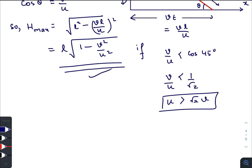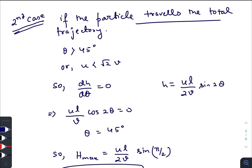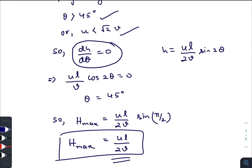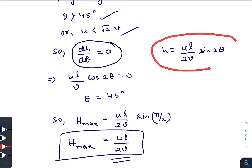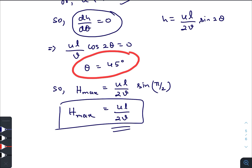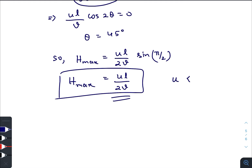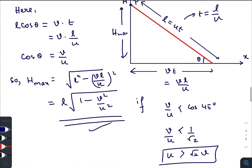The second case is when u < √2·v. If the particle travels the complete trajectory, then theta reaches beyond 45°. In that case, we simply use the standard maximum-minimum method: set dh/dtheta = 0. Recalling the expression for h, we get (uL/v)·cos(2·theta) = 0, so cos(2·theta) = 0, giving 2·theta = 90°, therefore theta = 45°. Substituting theta = 45° gives the value of h_max. This h_max applies when u < √2·v.